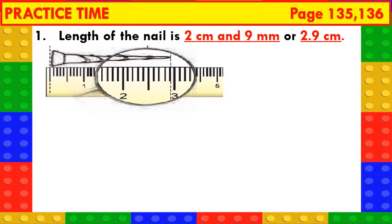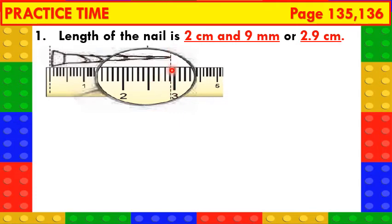Practice time, first one. Let us find the length of this nail using the given scale. The length of the nail is 2 cm and 1, 2, 3, 4, 5, 6, 7, 8, 9 — 9 mm, or we can also write it as 2.9 cm.